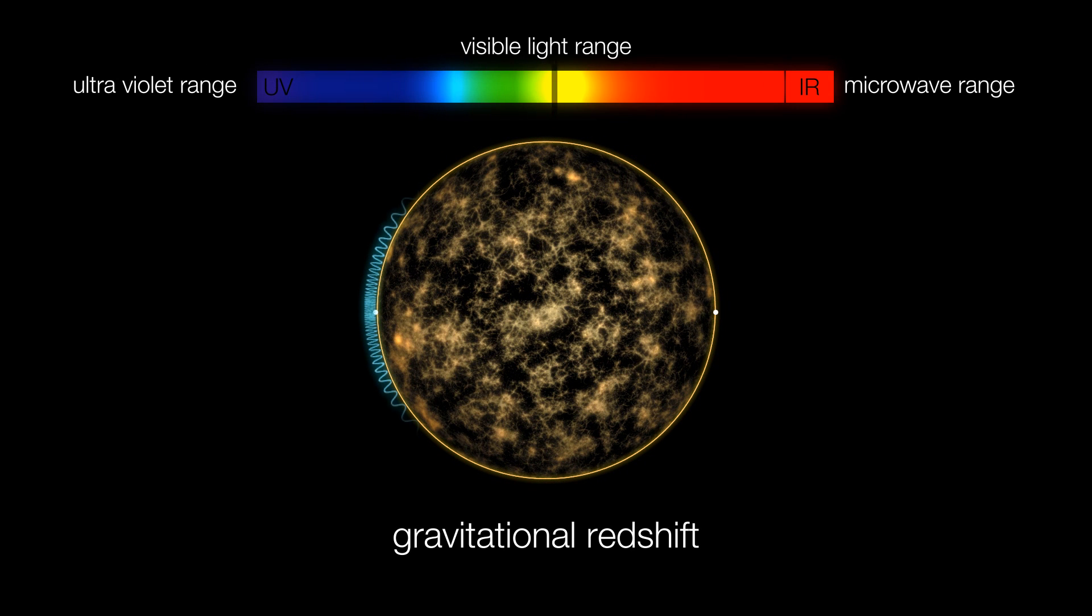A light wave suffers a significant loss of energy due to the gravity of the universe, resulting in a 4,000-fold red shift of the light wave towards the low-energy red range of the electromagnetic spectrum.